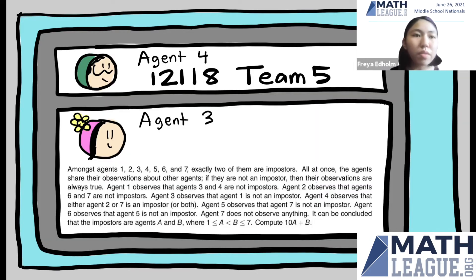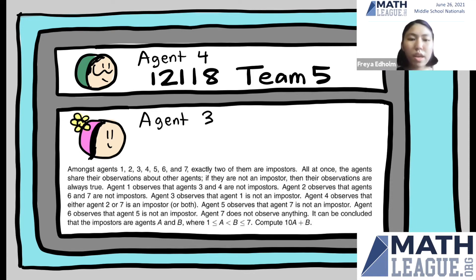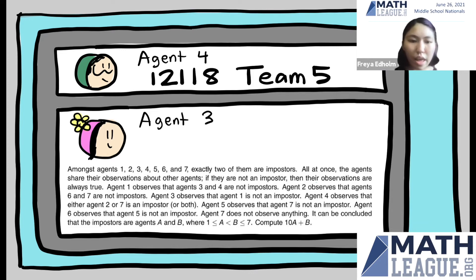I'll start reading the problem now. This is problem 1-2-1-1-18-5. Among agents 1, 2, 3, 4, 5, 6, and 7, exactly two of them are imposters. All at once, the agents share their observations about other agents. If they are not an imposter, then their observations are always true. Agent 1 observes that agents 3 and 4 are not imposters. Agent 2 observes that agents 6 and 7 are not imposters. Agent 3 observes that agent 1 is not an imposter. Agent 4 observes that either agent 2 or 7 is an imposter, or both. Agent 5 observes that agent 7 is not an imposter. Agent 6 observes that agent 5 is not an imposter. Agent 7 doesn't observe anything. It can be concluded that the imposters are agents A and B. Compute 10A plus B.